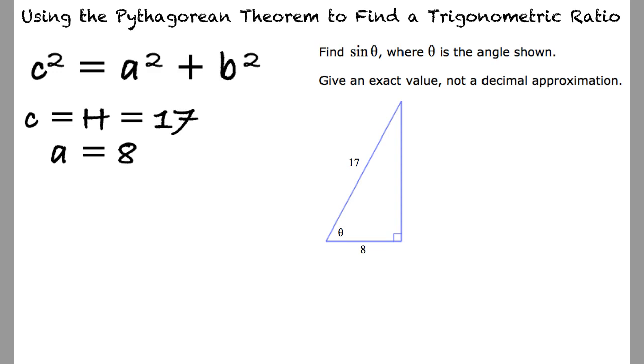Now, we can substitute the values for the hypotenuse and the adjacent side into the Pythagorean theorem. 17 squared equals 8 squared plus o squared.